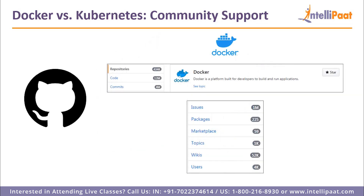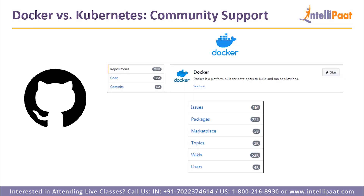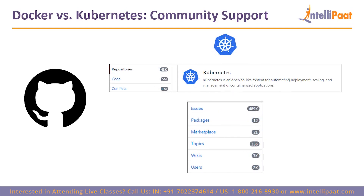On GitHub, Docker has more repositories than Kubernetes, as well as more code, commits, contributors, and users. Docker has 434k repositories, 12 million codes, and 4k users. Kubernetes has 43k repositories, 5 million codes, and 2k users. This should be enough to convince you about the popularity of Docker.